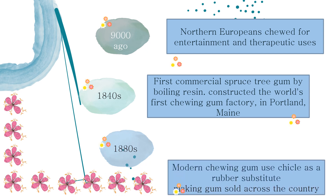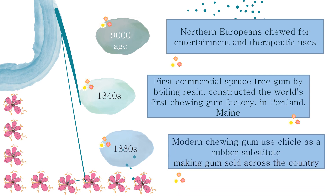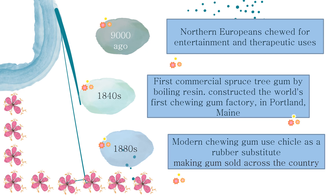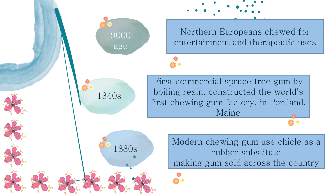By the late 1880s, according to Matthews, gum was being made and sold across the country. Chicle, imported to the United States from Mexico and Central America, served as the main ingredient in chewing gum until most manufacturers replaced it with synthetic ingredients by the mid-1900s.